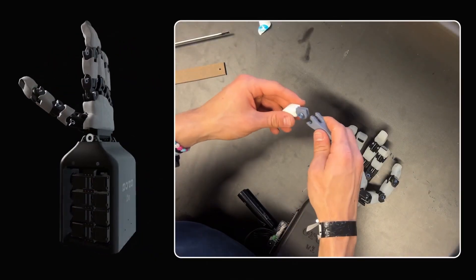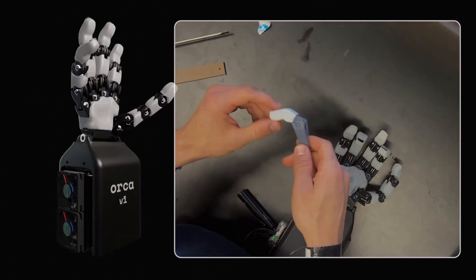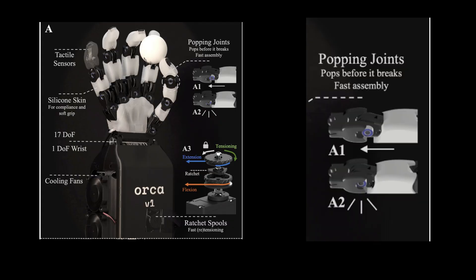Orca introduces poppable pin joints. The bearings sit inside arc-shaped grooves, staying firmly in place under normal conditions, but popping out when excessive loads occur. Instead of breaking, the joint simply dislocates, and you can snap it back in to resume operation.